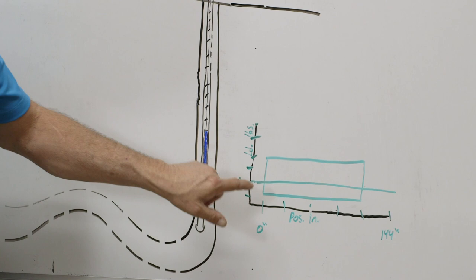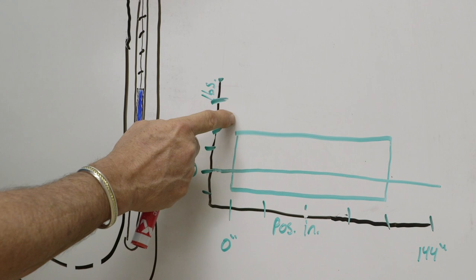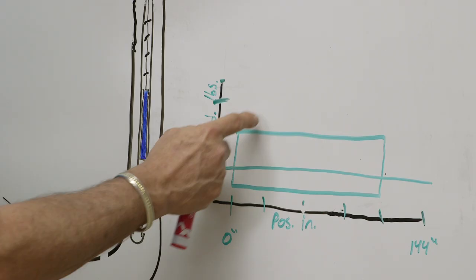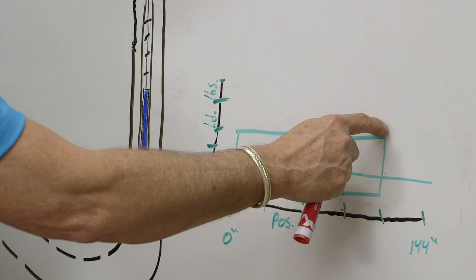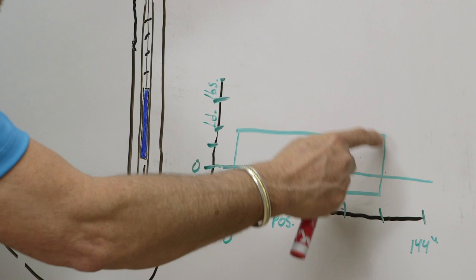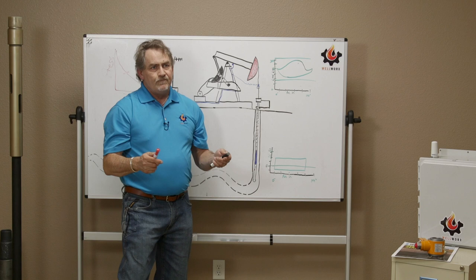In this case, the downhole card is full. Walk through this real quick. When we start the upstroke, the traveling valve closes, and the standing valve opens. This is the plunger is moving up. We get to this point in the cycle. This is the top of the upstroke. The plunger stops. Standing valve will fall on seat in this pump, and then we start the downstroke. And in this case, the traveling valve opens immediately. And this nice rectangle represents a good full pump.